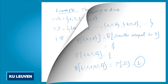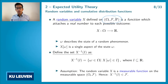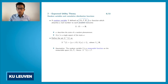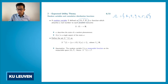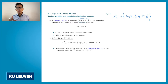A probability space is used to describe the possible outcomes and probabilities of a random experiment. Now assume you have a random experiment where you throw a die, but if you throw one, two, or three, you lose one euro; and if you throw four, five, or six, you gain one euro. If you play this random experiment, of course you are interested in the outcome, but you are even more interested in how much money you get.